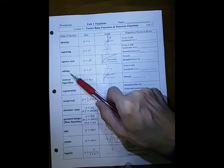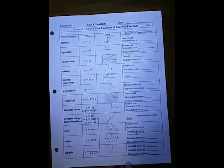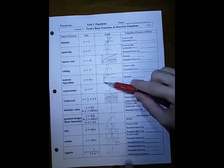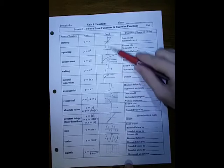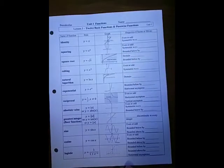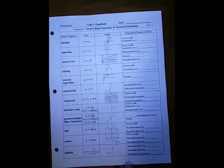The cubing function, y equals x cubed, starts at minus infinity and goes up through 0, then goes all the way up to infinity. Is that an even or an odd function? And because of that, is it symmetric with respect to the origin or the y-axis?